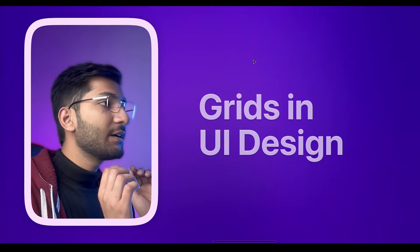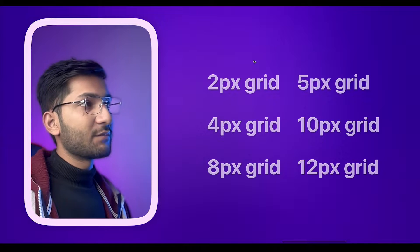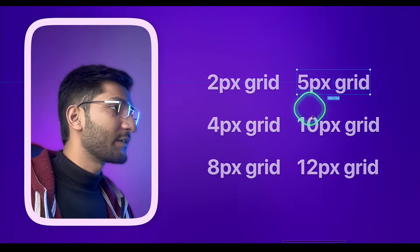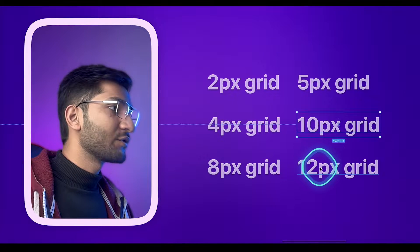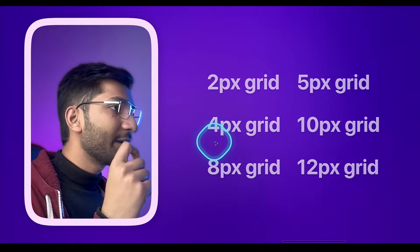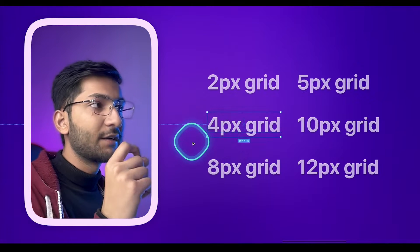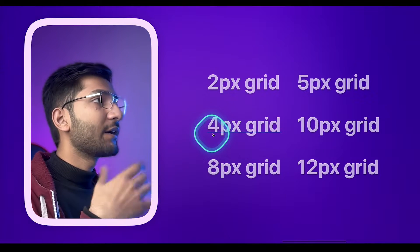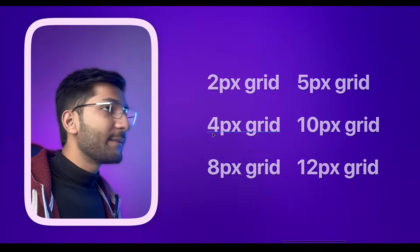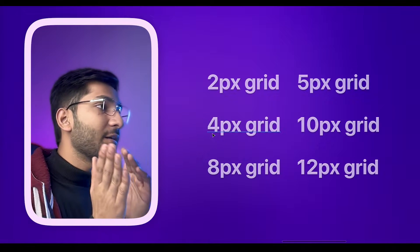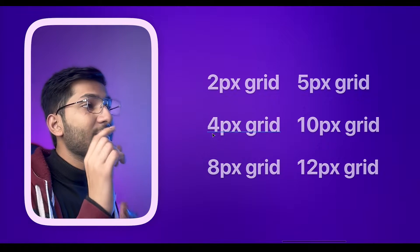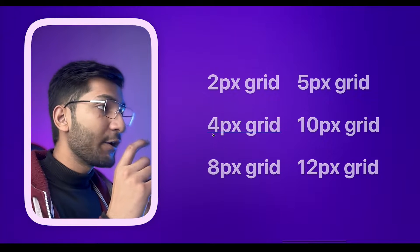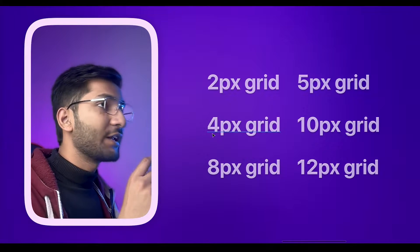We use pixel grids — we have different grid systems like 2 pixel grid, 4 pixel grid, 8 pixel grid, 5 pixel, 10 pixels, 12 pixels. For example if I take 4 pixel grid, imagine I am using a 4 pixel grid in my design. Then what I will do is I will design all the elements — like I am designing a button — and I will give the height of the button according to the 4 pixel grid. The height of the button will be in multiples of 4.